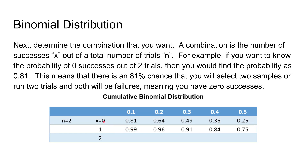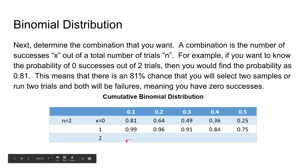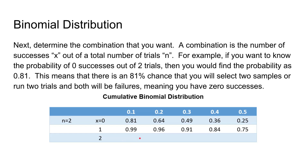The cumulative binomial distribution of zero successes and one success sums to 0.99. To get to 1, the probability that both are successful is 0.1 times 0.1, which equals 0.01 — and that is the difference between 1 and 0.99.